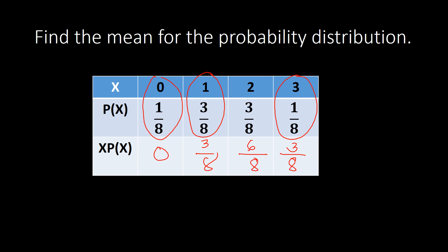Adding everything on the last row: since they are similar fractions, we simply add: 3 plus 6 is 9, plus 3 is 12, giving us 12/8. To reduce, we extract the common factor of 4 from both 12 and 8: 12 divided by 4 is 3, and 8 divided by 4 is 2, so we get three-halves (3/2).